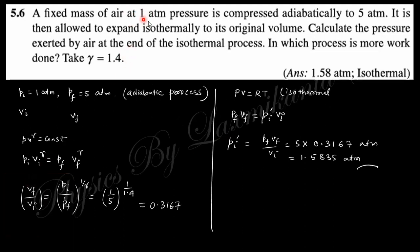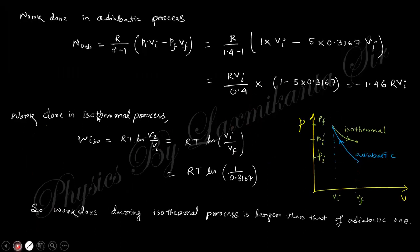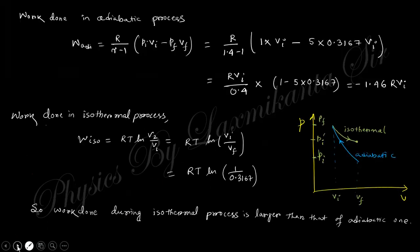Question 6: A fixed mass of air at one atmospheric pressure is compressed adiabatically to five atmospheric pressure, then allowed to expand isothermally back to its original volume. Using the adiabatic relation, the final pressure after the isothermal expansion is calculated. For which process is more work done? Comparing the areas under the PV curves, the work done during the isothermal process is larger than during the adiabatic process.